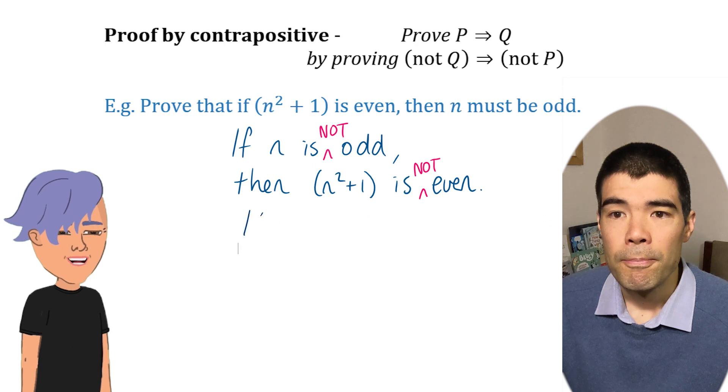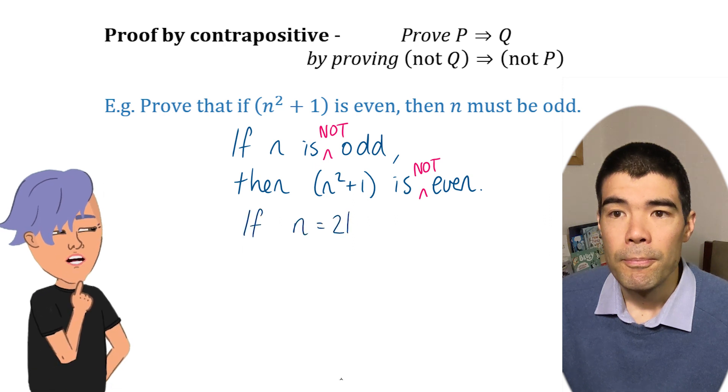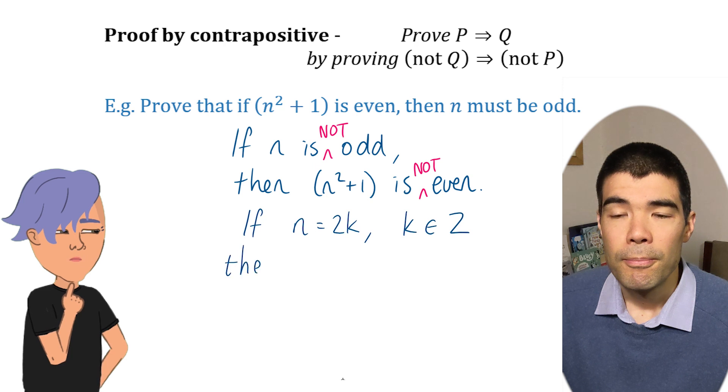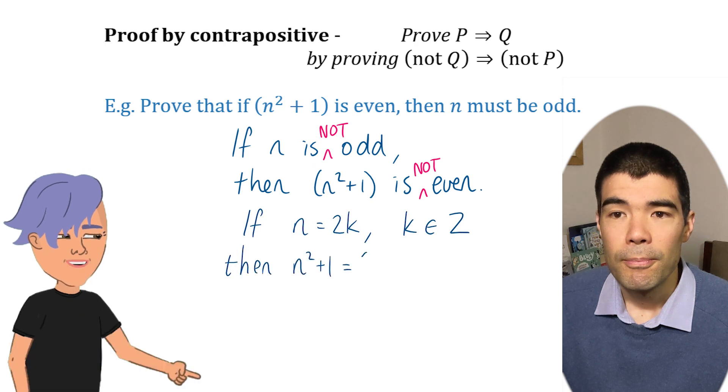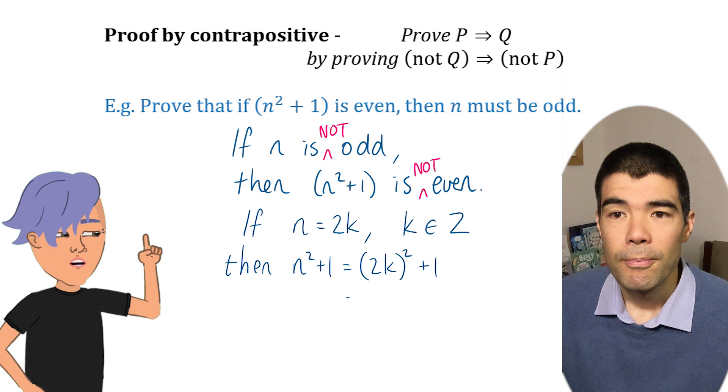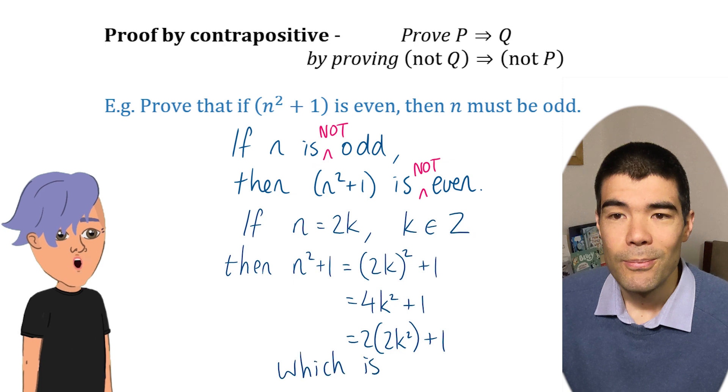Start by assuming n is not odd. That's even, so n is 2k. n squared plus one would be 2k bracket squared plus one. That's 4k squared plus one. Which, yeah, that's odd. Not even. Well done.